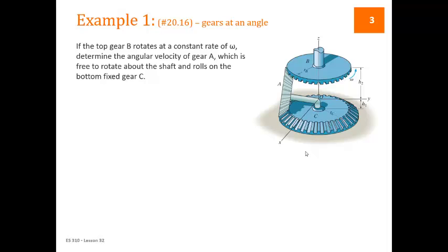In this first example we have a situation with meshed gears. The bottom gear is stationary and the top gear is turning at a constant rate of omega. We are asked to find the angular velocity of gear A around the stationary point O. To do this we're going to identify several points about which we know something about the velocity — specifically point P at the top and point R at the bottom.